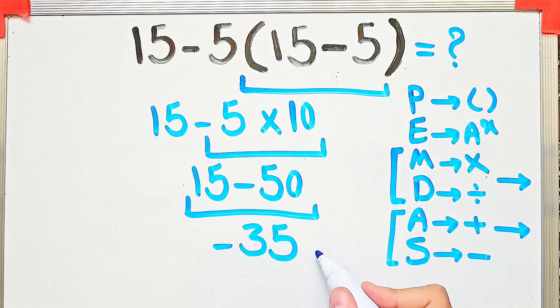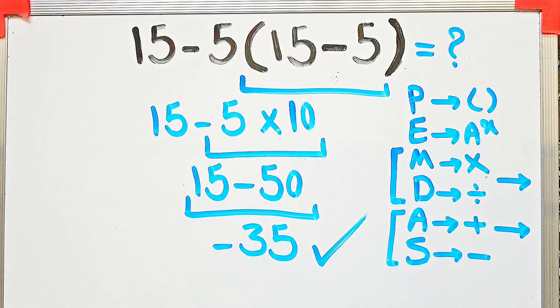And 15 minus 50 equals negative 35. The final answer is negative 35. Thanks for watching guys — to see more math videos, subscribe to the channel. Goodbye!